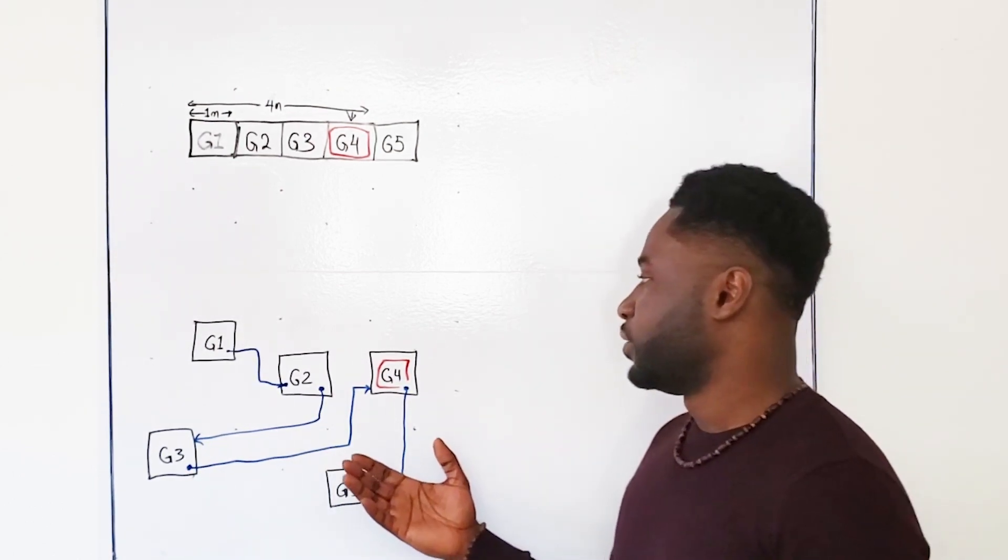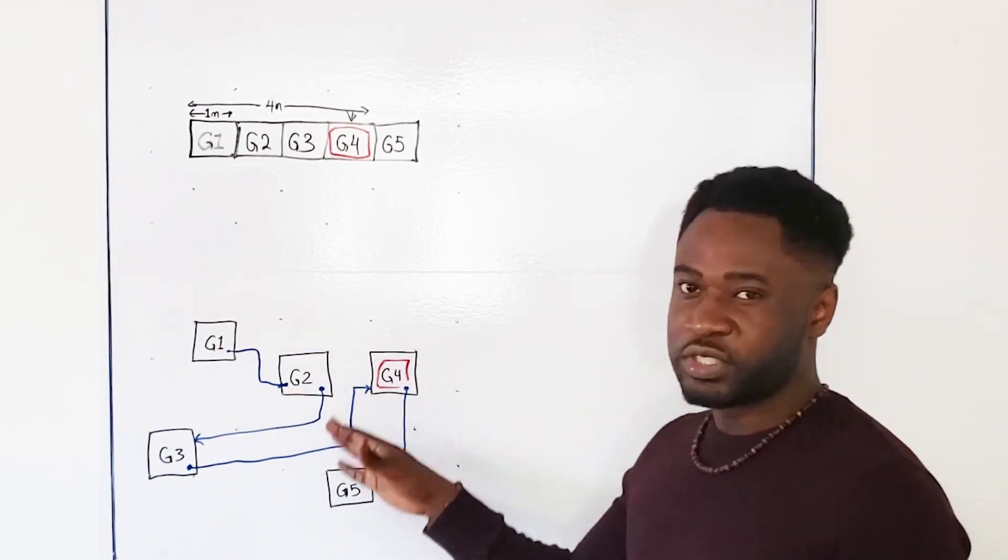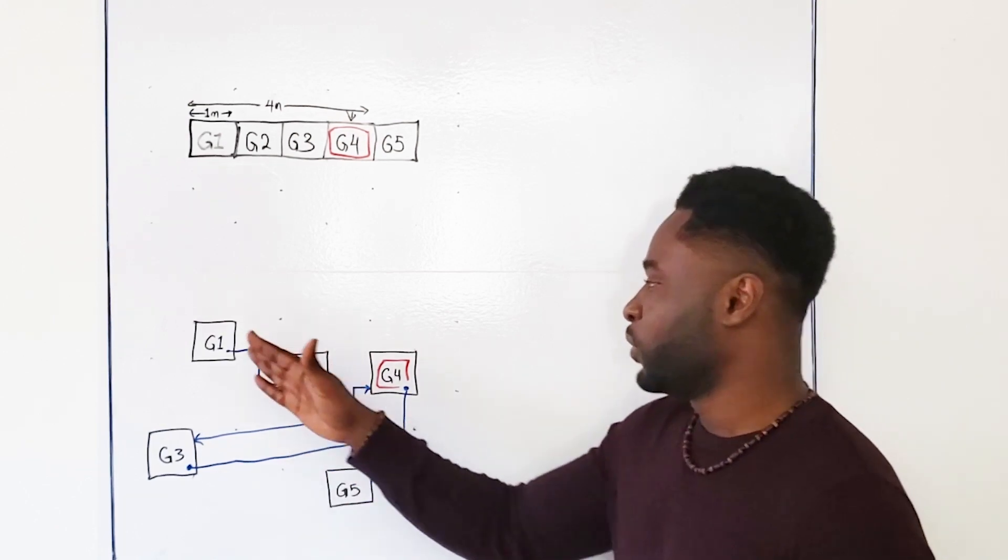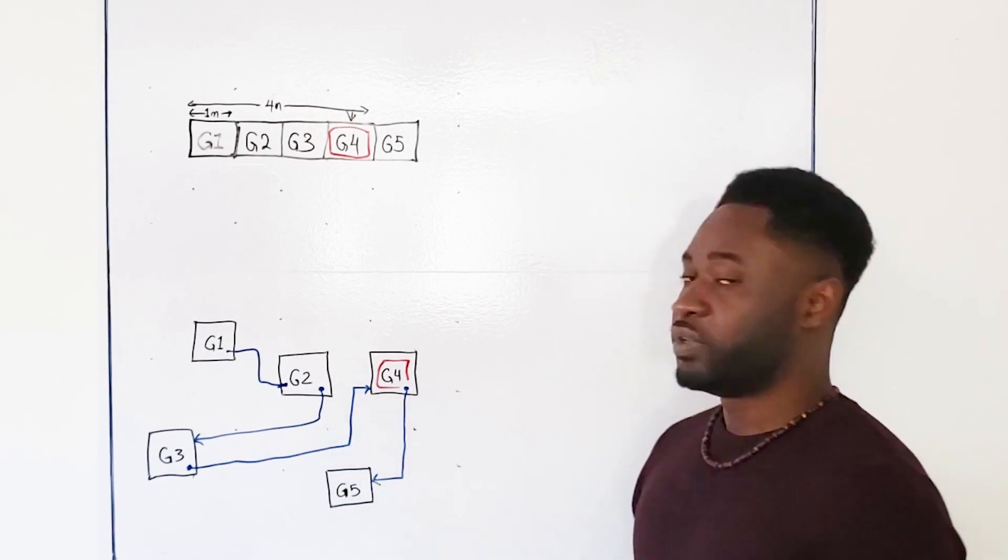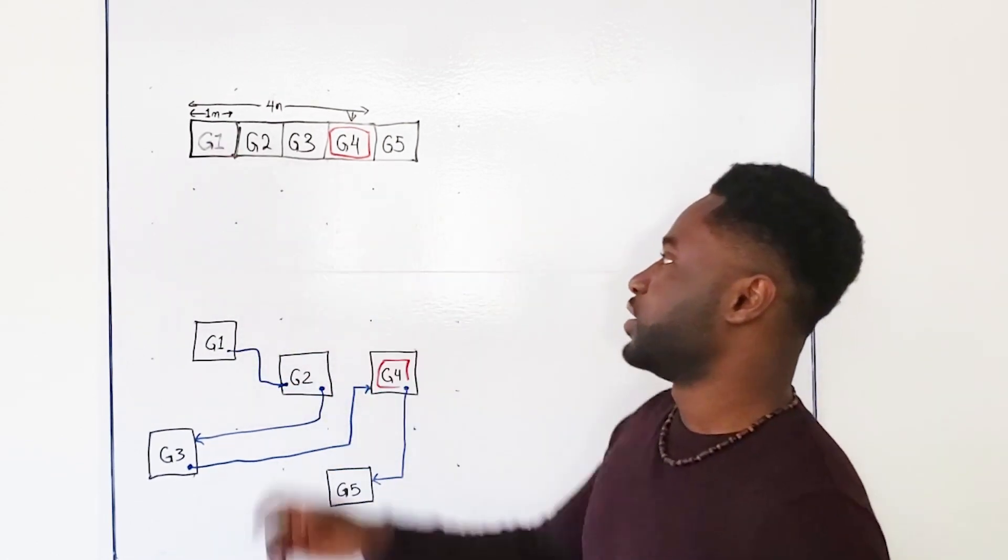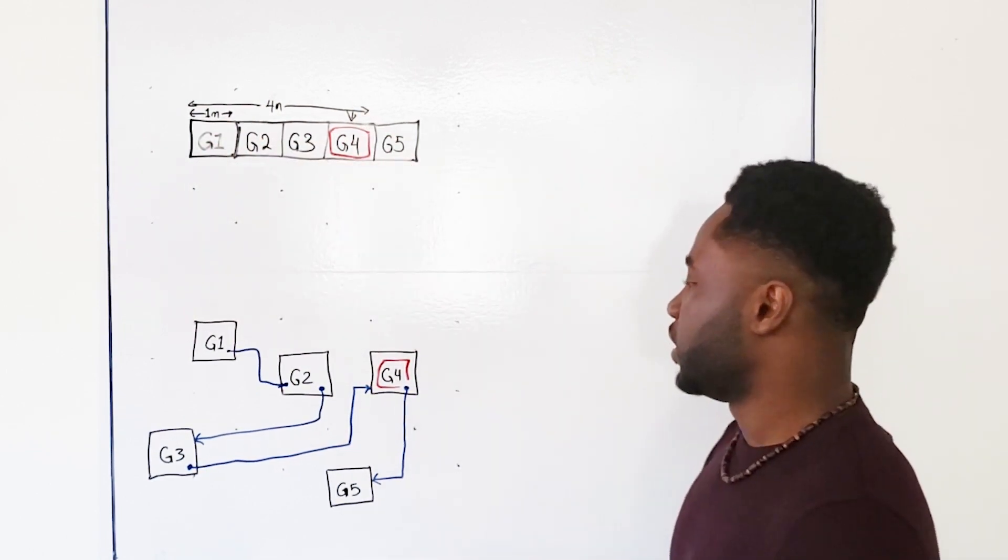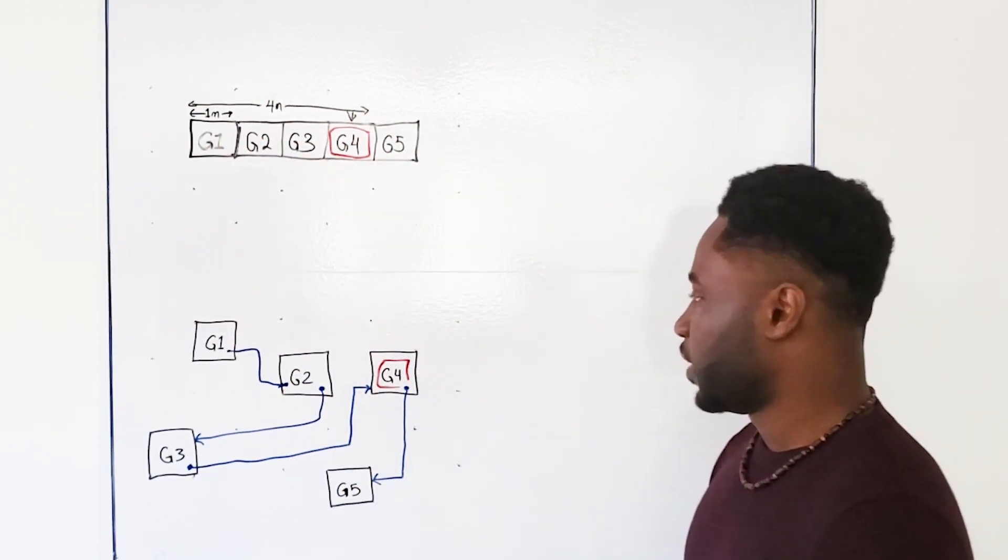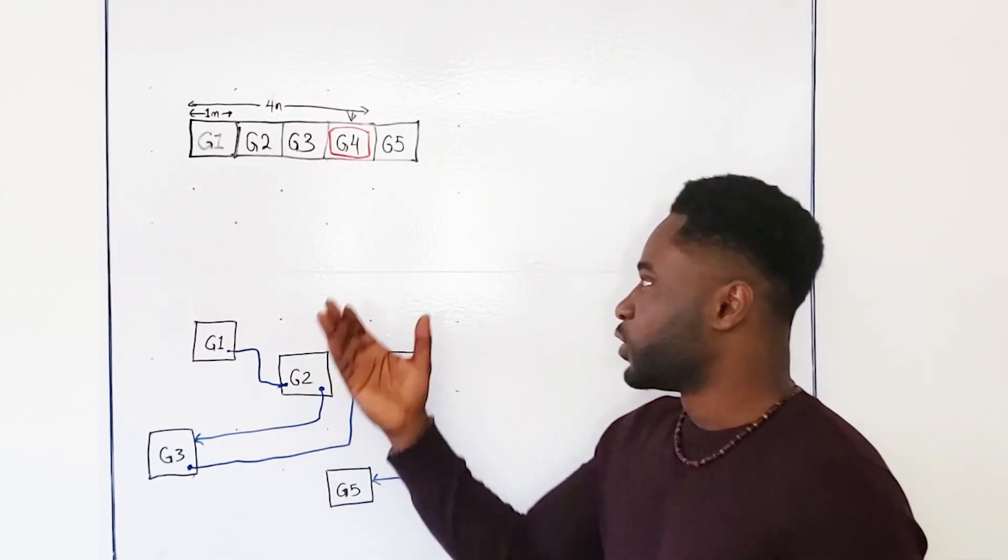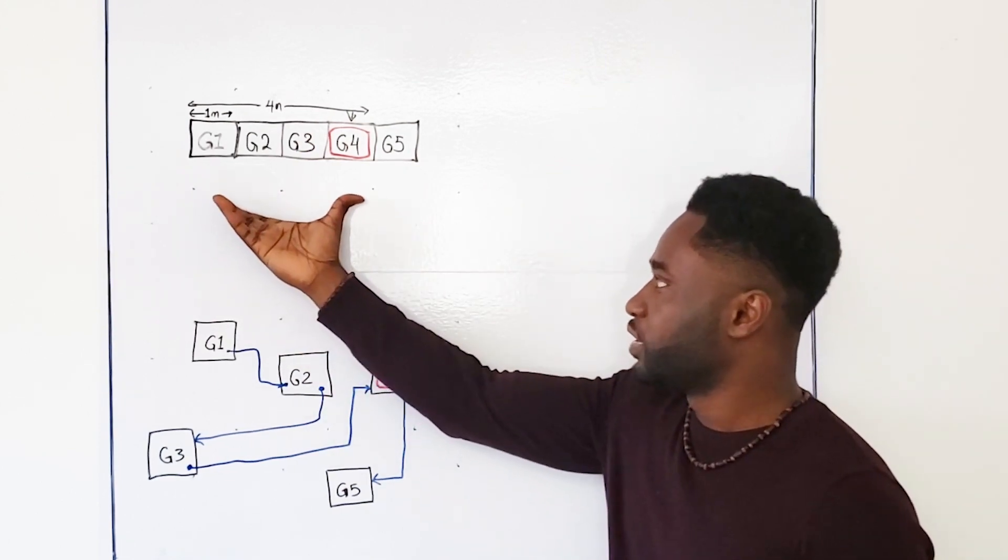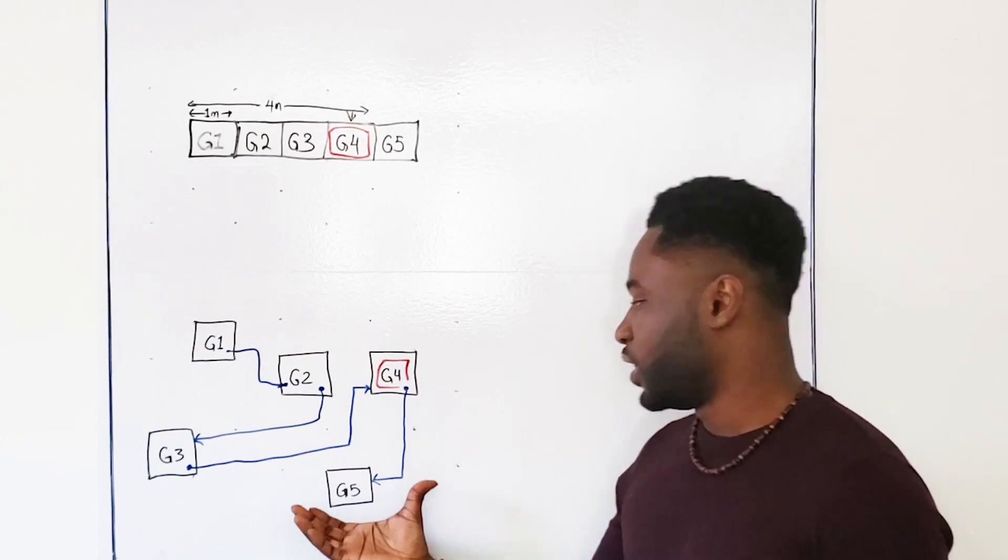As you can see here, finding this guest in this type of structure right here is much more difficult because you have to go and visit each and every guest before them, before you can get to the guest you're looking for. In this case, you just have to do a simple calculation and then you can find exactly where the location of the person is. You don't have to visit each and every single person before you can get here. So searching with this type of structure is much faster than searching with this type of structure.